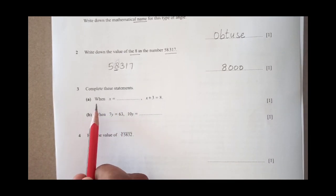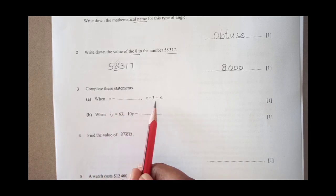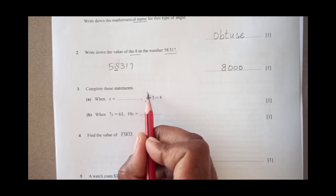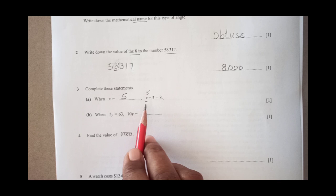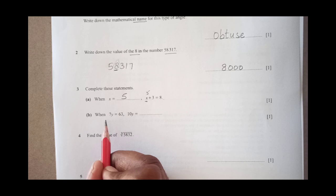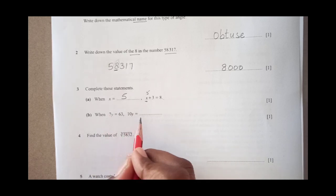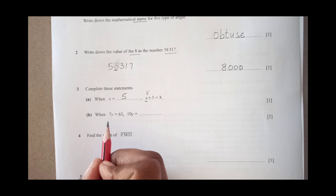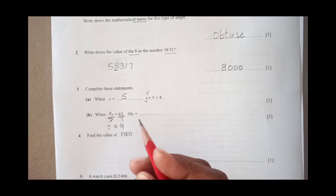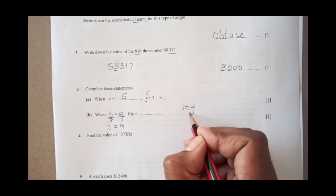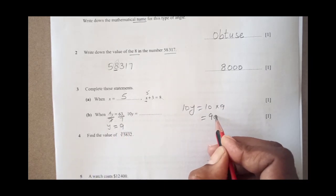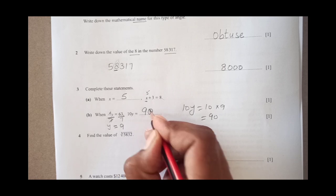Complete these statements. The first one is when x equal to dash x plus 3 is 8. You see what value of x make it 8. If you see 5, 5 plus 3 is 8. x is 5. Part B, 7y equals to 63. 10y is what? For that we need to have the value of y. Divide by 7, 7 goes y equals to 7 times 9. This is 63. Meaning y is 9. 10y is 10 times 9, which is 90.